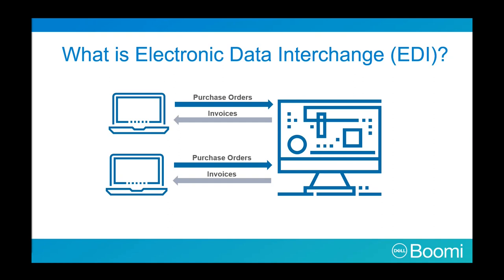Because EDI documents are processed by computers, you must use a standard format to describe each piece of information so the computer can read the documents. Today there are many EDI standards — X12, EDIFACT, and TRADACOMS — and versions such as X12 850 or EDIFACT version D12 release A. When businesses exchange EDI documents, they must agree on a specific standard and version. The exchange of EDI documents between two different companies is referred to as a trading partner relationship. For example, Company A may buy goods from Company B — Company A sends orders to Company B, making them trading partners.